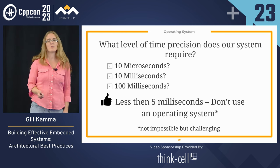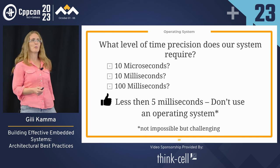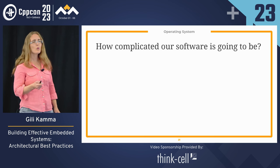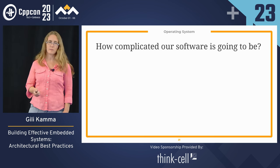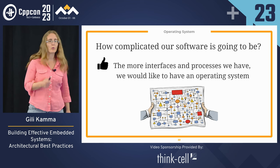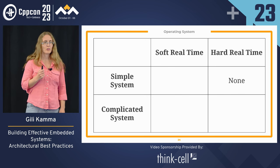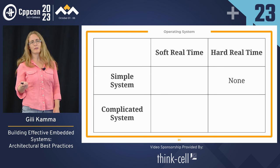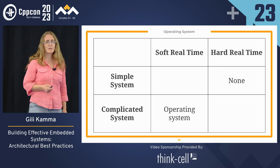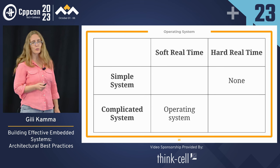The question we need to ask ourselves: what level of time precision does our system require? Ten microseconds? Ten milliseconds? One hundred milliseconds? In general, less than 5 milliseconds — don't use an operating system. I don't say it's impossible, but it's not recommended. The second question to ask about operating systems is how complicated our software is going to be. In general, the more interfaces and processes we have, we would like to have an operating system.